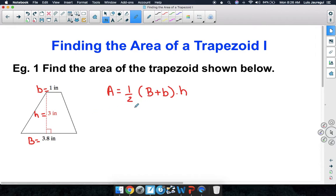So let's substitute those values into our formula. Hence, we're going to get A = 1/2 times the big base, which is 3.8 inches, plus the little base, which is 1 inch, all of that multiplied by the height of 3 inches.